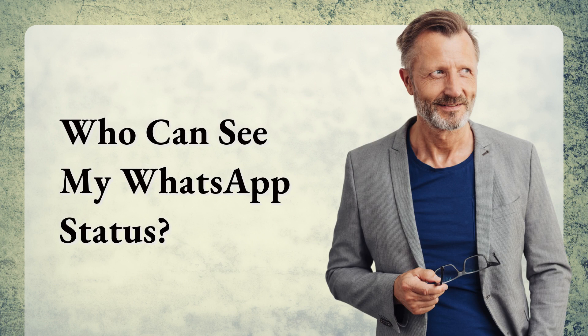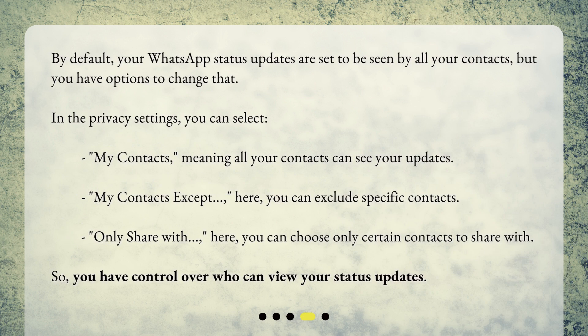Who can see my WhatsApp status? By default, your WhatsApp status updates are set to be seen by all your contacts, but you have options to change that. In the privacy settings, you can select: 'My contacts,' meaning all your contacts can see your updates; 'My contacts except,' where you can exclude specific contacts; or 'Only share with,' where you can choose only certain contacts to share with. So you have control over who can view your status updates.